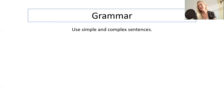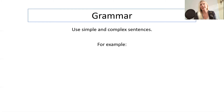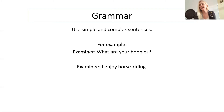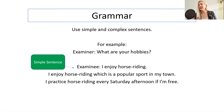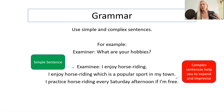Grammar. Use simple and complex sentences. When we speak, we're not consciously creating complex sentences, but as you practice your English you're getting used to making those longer sentences that are probably complex. For example, when the examiner asks you what are your hobbies, you could say 'I enjoy horse riding' — that's a simple sentence. But if you want to make it longer: 'I enjoy horse riding, which is a popular sport in my town,' or 'I practice horse riding every Saturday afternoon if I'm free.' Here we have two complex sentences — a relative pronoun and a conditional sentence. The great thing about these is that you're giving more information, longer and more interesting answers, but you're also meeting the grammar criteria for a variety of complex forms.